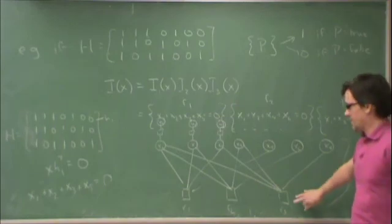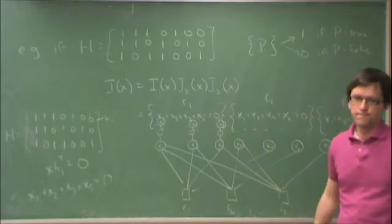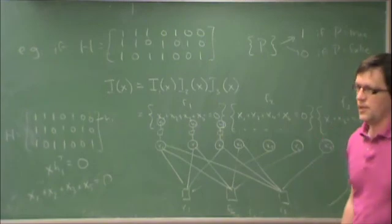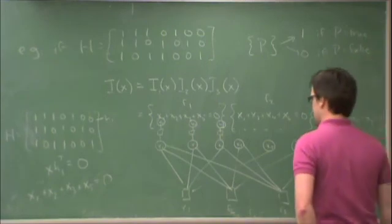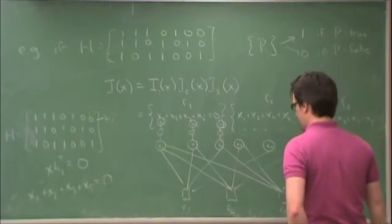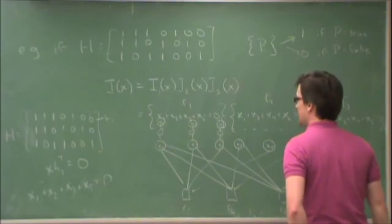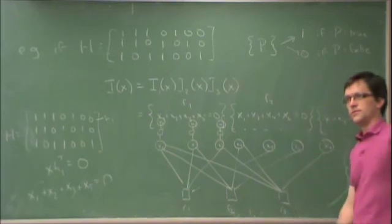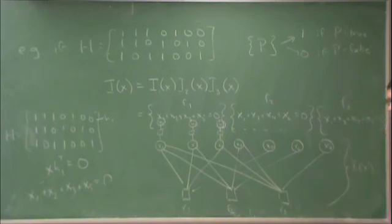Now, what's the problem with this factor graph? It contains lots and lots and lots of cycles. So, in fact, any non-trivial code, the factor graph expressed like this contains cycles.